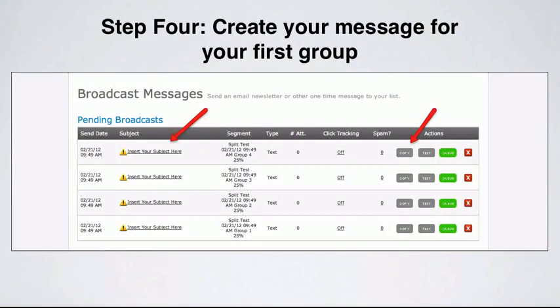In step four, we want to create the message for our very first group. So for that first 25% who are going to receive this specific message, we want to create that message, create the subject line and the content, and get it ready to queue up.